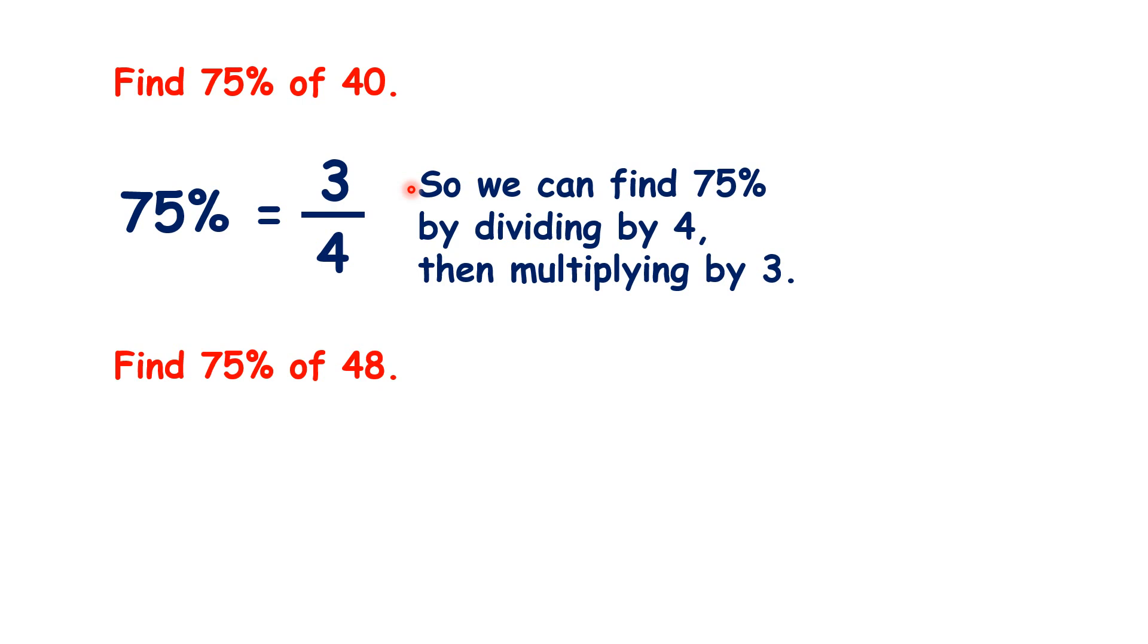Now to find 75%, we need to remember that 75% as a simplified fraction is 3 quarters. So we can find 75% by dividing by 4, then multiplying by 3, because we know that to find a fraction of a number, we divide by the denominator and multiply by the numerator. Dividing by 4 gives us 10, and then multiplying by 3 gives us 30, so that's our answer.